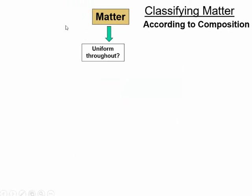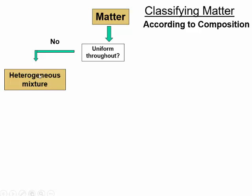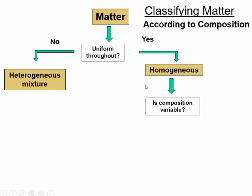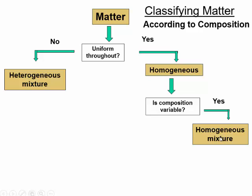The first thing to ask when classifying matter according to composition is: is it uniform throughout? If not, then you already know what it is according to this classification system — it's a heterogeneous mixture. But if it is uniform throughout, we have a few more questions to ask. Is the composition variable? If it's variable, then you have a homogeneous mixture, such as a mixture of sugar in water. There's no rule that says a mixture of sugar and water has to have a certain ratio — all different kinds of concentrations can exist.